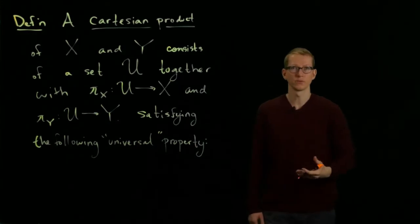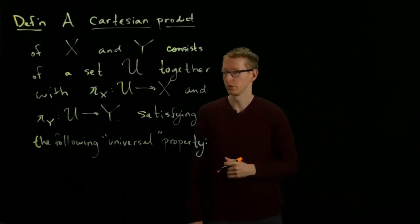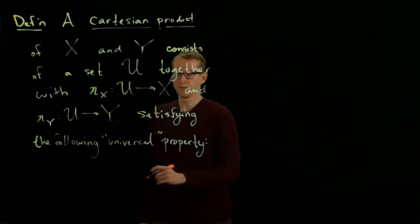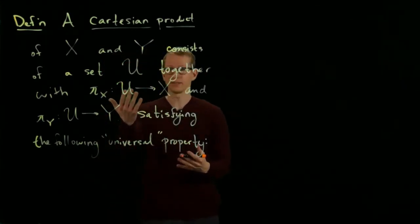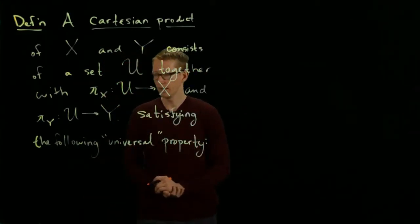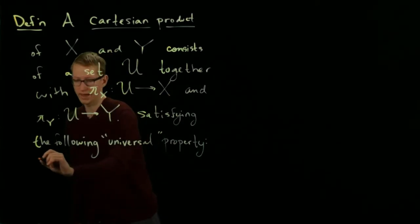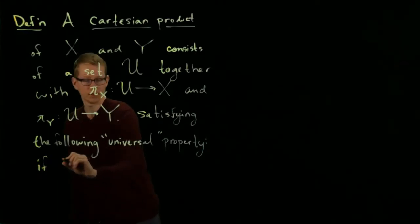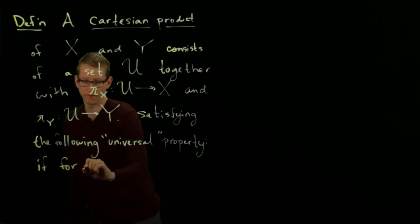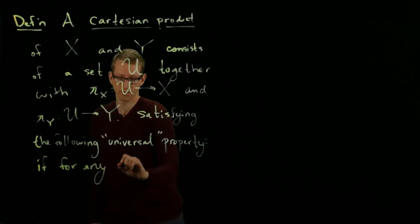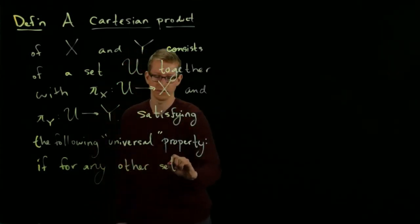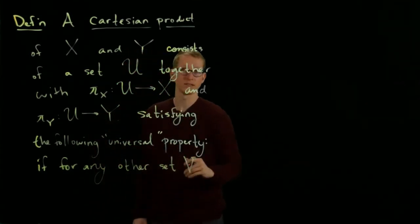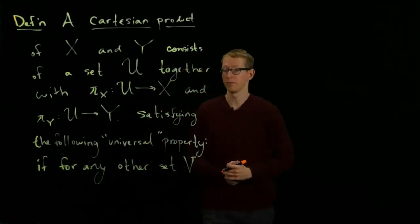The word universal will be explained shortly. First notice that we have a set and we have two functions. If for any other set, let's call it V, together with exactly these kinds of maps...